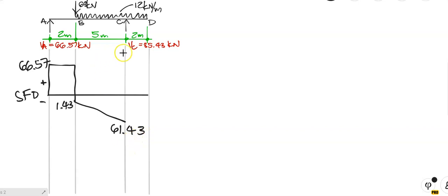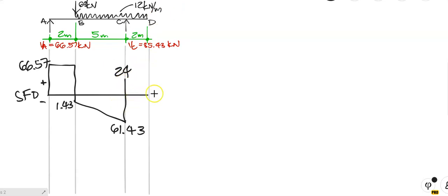What's happening at C? I've got a load of plus 85.43 — it's plus because it's going upwards. So with minus 61.43 on my calculator, don't clear it. Add plus 85.43 and I get plus 24.00 exactly. Then from C to D, I've got a load of minus 12 times 2, which is minus 24. What's plus 24 minus 24? It's zero — a straight inclined line down to that point, giving plus, then minus, then plus regions.